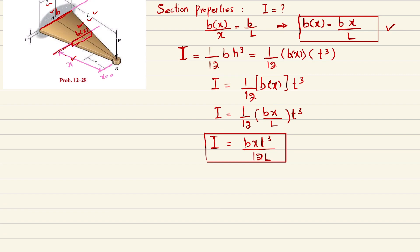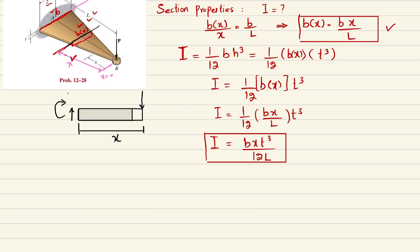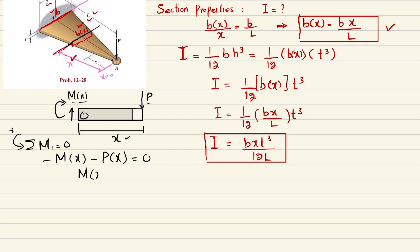Now, cut the beam at position x and draw the free body diagram. The cut section has uniform thickness t and the applied load P acts at the free end, at distance x from the cut. There is a shear force and a moment M(x) at the cut. Taking moments about the cut point, with counterclockwise positive: M(x) - P·x = 0, giving M(x) = -P·x.